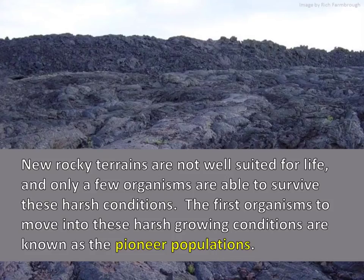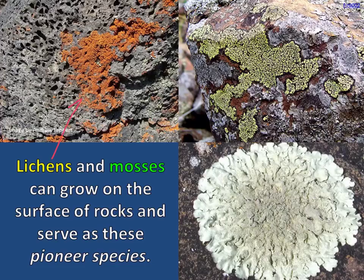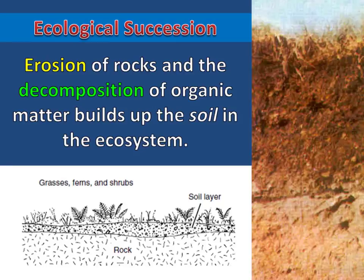New rocky terrains are not well suited for life and only a few organisms are able to survive these harsh conditions. The first organisms to move into these harsh growing conditions are known as the pioneer populations. Lichens and mosses can grow on the surface of rocks and serve as these pioneer species. Erosion of rocks and the decomposition of organic matter builds up the soil in the ecosystem.